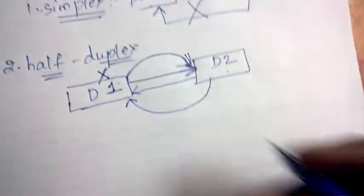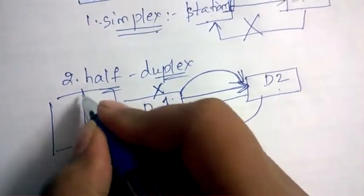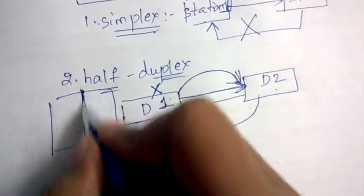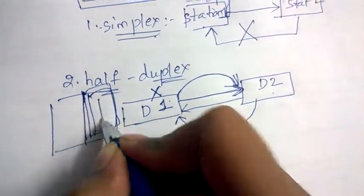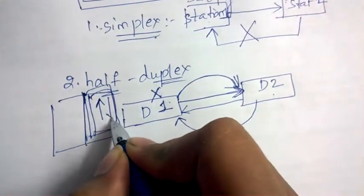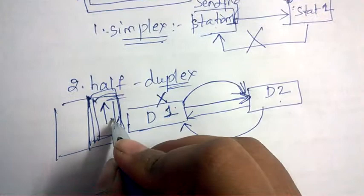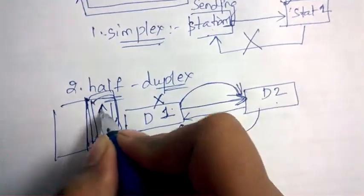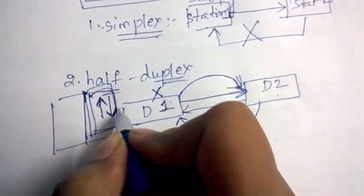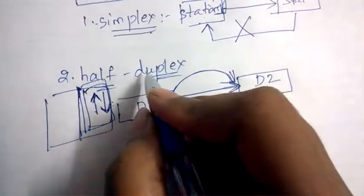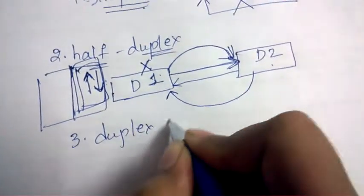An example of half duplex is a one-way highway road. On this road, vehicles can go in one direction as well as the other direction, but not at the same time — if they go at the same time an accident can happen. So either one goes or the other goes; both can go but not at the same time. This is half duplex.